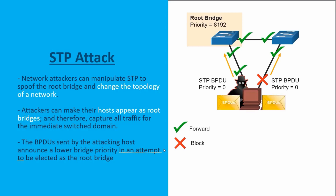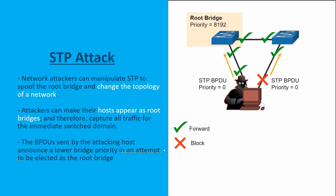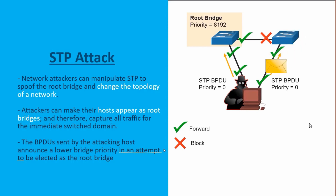To do this, they would be sending out Bridge Protocol Data Units (BPDUs), which are Spanning Tree Layer 2 messages, and these messages will include a priority of something insanely low — such as zero, for example, as shown in our graphic. By sending out these Spanning Tree messages claiming an insanely good priority, the network infrastructure will view that threat actor's host — pretending to be a switch — as the root bridge. All devices will find the best path to that root bridge, dropping their main connections and routing through that attacker's switch, allowing the threat actor to act as a man-in-the-middle and see all network traffic across the domain.